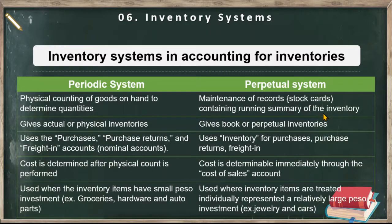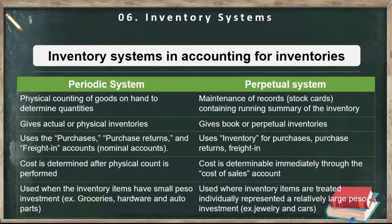But for verification, a physical count of inventories may still be conducted. It's more convenient in perpetual because there are records — you don't even have to go to the warehouse. Unlike in the periodic system, you will only know the ending inventory by counting the goods on hand. The periodic system gives actual or physical inventories because only those items remaining are part of the ending inventory. The perpetual system gives us the book or perpetual inventories, based on the running balance.